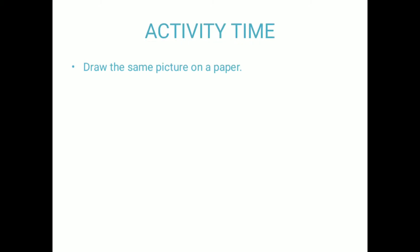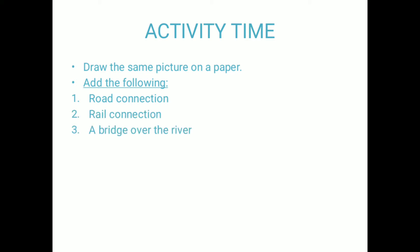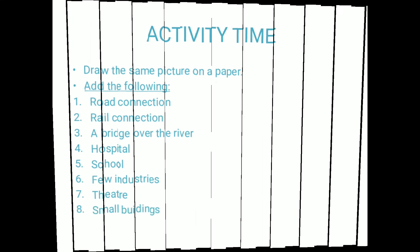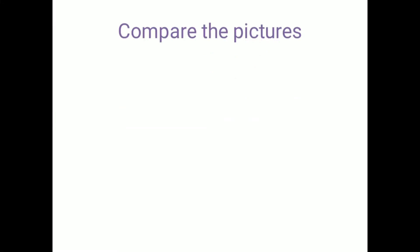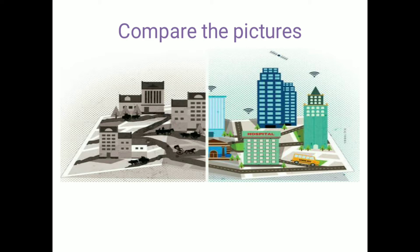Now activity time. What you have to do? Draw the picture of a village on paper, and add the following things after drawing: road connection, railway connection, bridge over the river, a hospital, a school, a few industries, and a theatre. Now tell me, does it look the same? Will you call that picture a picture of a village? No. So compare it with the previous one — you can see a lot of difference.